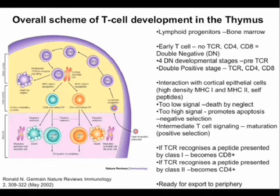The mature T cells that exit the thymus express different ligands on their cell surface. For example, L-selectin causes naive T cells to home to secondary lymphoid organs. There's also a chemokine gradient and chemokine receptors — a highly unique set of receptors on their cell surfaces — that guide their migration.